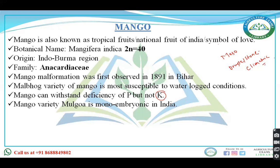The mango variety Mulgoa is monoembryonic in nature. Most mango varieties are polycarpic in nature, but this Mulgoa variety is monoembryonic. In monoembryonic, one seed gives rise to one seedling. In polyembryonic, one seed gives rise to various seedlings — two, three, four — and anyone will be alive, rest may die.